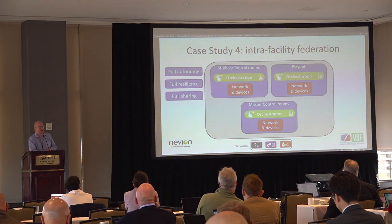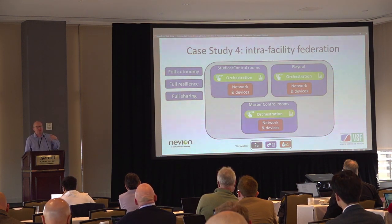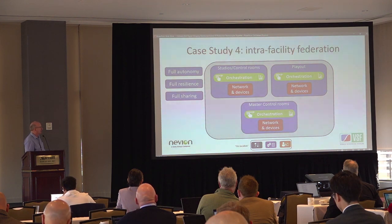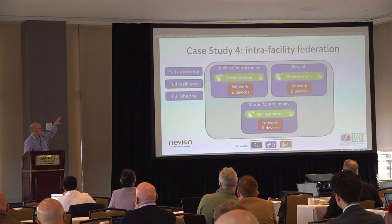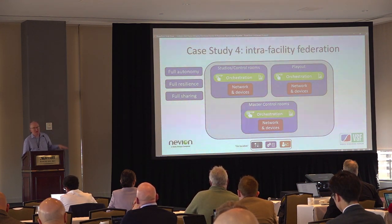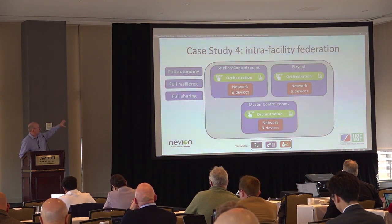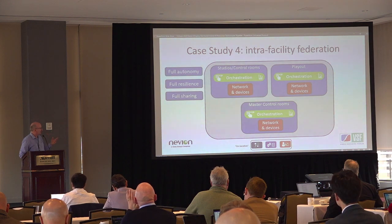Case study four: a relatively new solution illustrating another use of federation. This is a traditional on-location infrastructure where acquisition, processing, and control are co-located on a campus. But the customer wanted maximum autonomy, resilience, and security within their studios, control rooms, playout infrastructure, and MCR areas. We ended up implementing different control systems for each of those areas and federating them together — secure resource sharing with even more segregation and resilience. This is within a single organization, not across wide area networks.